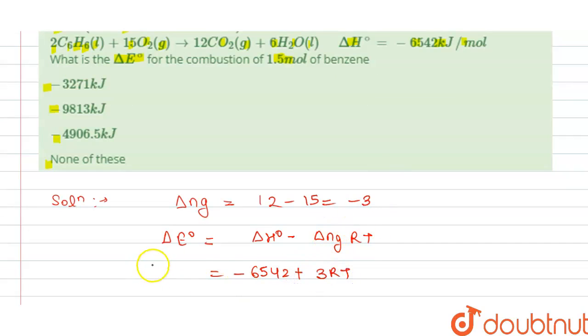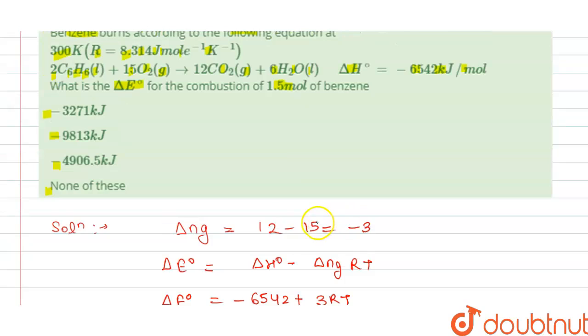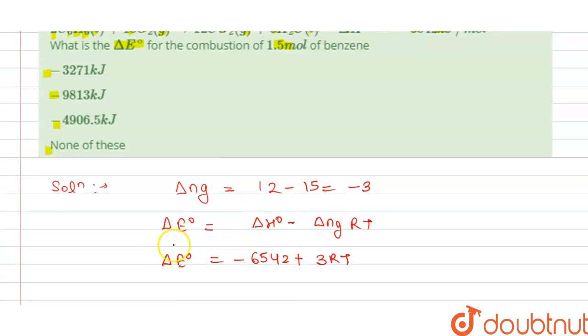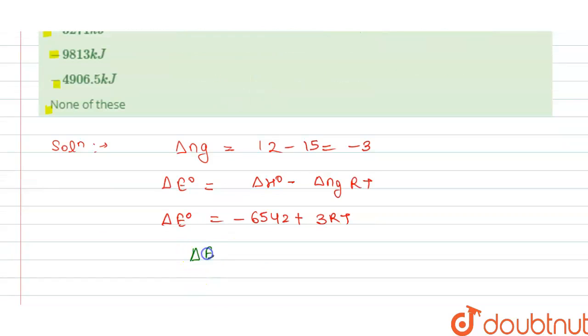From this we can write delta E⁰ equals 1.5, so we get delta E⁰ equals 1.5 divided by 2, times minus 6542 plus 3RT.